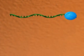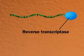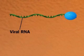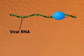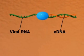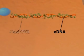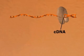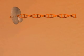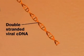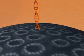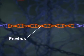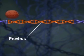Using reverse transcriptase brought in by the virus, the viral RNA makes a complementary cDNA. The viral RNA degrades, and the cDNA is the template for a second DNA strand. The double-stranded DNA enters the host cell's nucleus and integrates into a chromosome as a provirus.